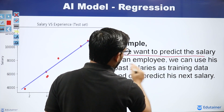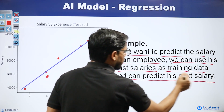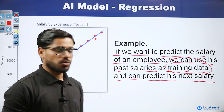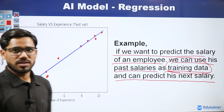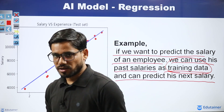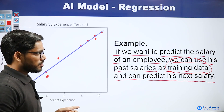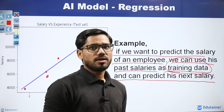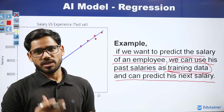If we want to predict the salary of an employee, we can use his past salary as training data and predict his next salary. There are two types of data: training data, which is the data provided to the machine, and testing data, which is the output the machine predicts — the future salary. Testing data may or may not be correct, which is why it is called testing data. These results measure our accuracy.